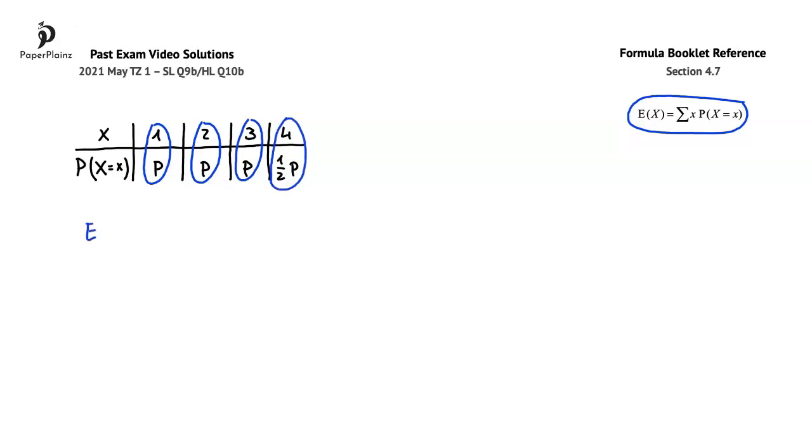This gives us that E(X) is equal to p, plus 2p, plus 3p, plus 4 times 1 half p.